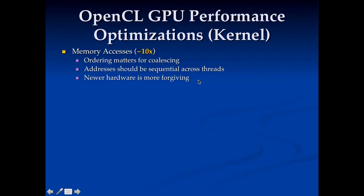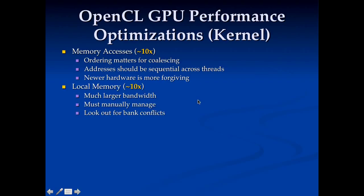This is another reason why CPU and GPU code needs to be optimized differently. CPUs don't have any concept of coalescing, so for them it doesn't matter and you want to focus on making the cache and prefetch work. Local memory is another big deal on GPUs — it has about 10 times the bandwidth of global memory. If you can take advantage of it you can get much better performance, but you have to manage it manually and watch out for bank conflicts between all your threads.